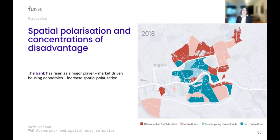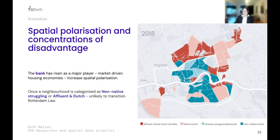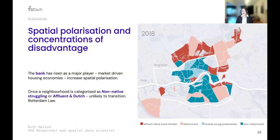The second insight is spatial polarization and concentrations of disadvantage. The bank has risen as a major player and the housing market has become more market-driven. There has been an increase in spatial polarization between south and north, and once a neighborhood is categorized as non-native Dutch or affluent Dutch, it is unlikely to transition. Notably, all of the neighborhoods on which the Rotterdam Law has been imposed are non-native Dutch neighborhoods and they haven't changed over time — whether due to stigma or because a policy of social exclusion simply doesn't work to uplift a neighborhood.